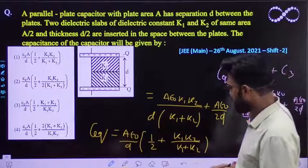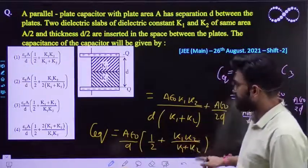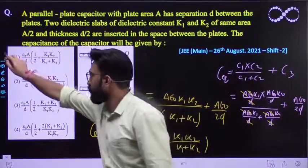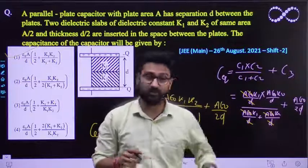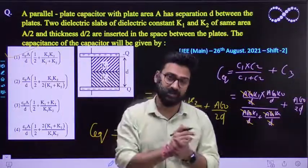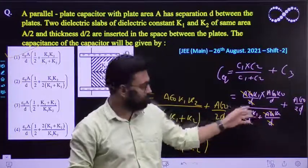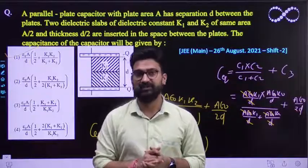Finally dekho, kaun sa option hamara sahi raha gaya? A epsilon naught by D - half plus K1 K2 divided by K1 plus K2. So first option is our correct option. Thoda sa lengthy hai, but aapko visualization, agar aap pata hai ki kaise solve karna hai, to jaldi ho jata hai. Kyun ki most of the terms has got cancelled out. To easily aap kar paenge. I hope this question is clear to everyone. Thank you.